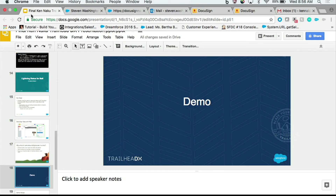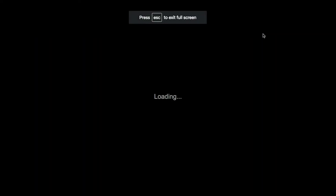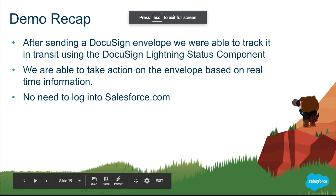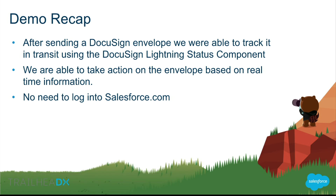So a recap of what you just saw: we were able to track an envelope and make changes on the fly based off of the information communicated to us. We didn't have to leave our email — we did everything within the context of Gmail. And we were able to get real-time information on this envelope.